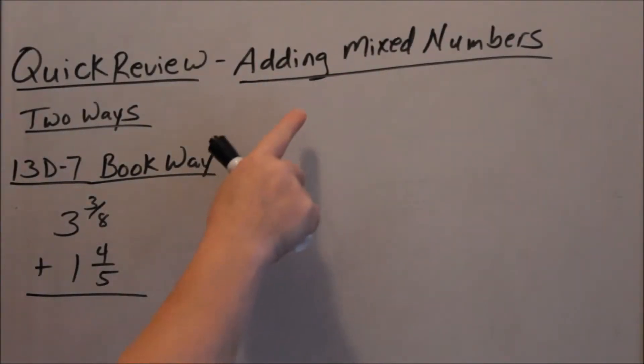Alright, we're going to do this quick review of adding mixed numbers. So I'm going to do this problem two different ways, looking at 13D7. I'm going to do it two ways. First, I'm going to do it the book way.